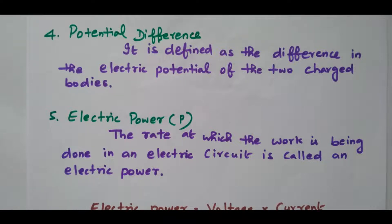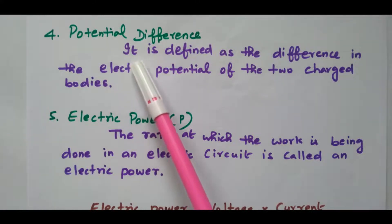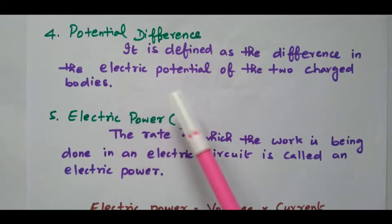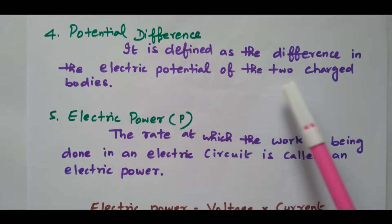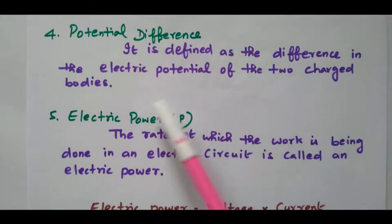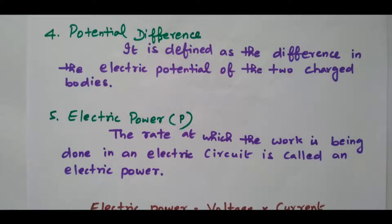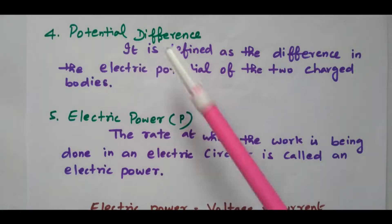Next, we will see the potential difference. In one place the electrons are more, in another place electrons are less. That difference in potential of two different bodies is nothing but potential difference. For example, in one place there are 100 electrons and another place there are 1000 electrons — that difference in potential is called potential difference.